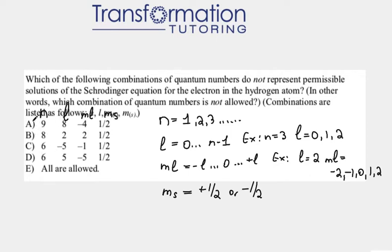Let's go through a, n is equal to 9. Can l be equal to 8? Yes, it can because l can go from 0 to n minus 1. So this l could go from 0 to 9 minus 1, which is 8.